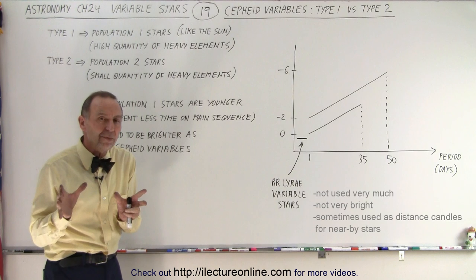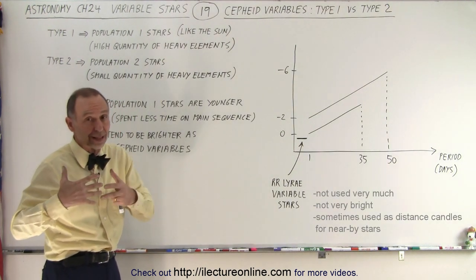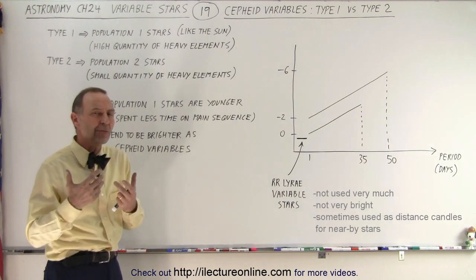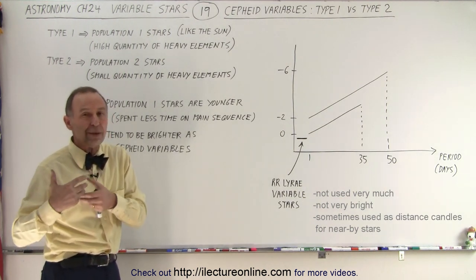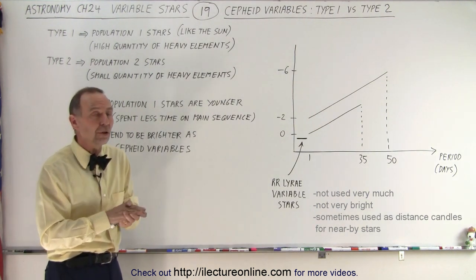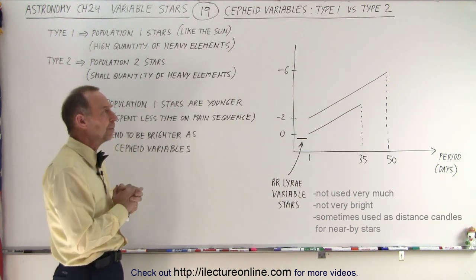So by the time they become Cepheid variables, notice that younger stars on average have spent less time on the main sequence than older stars. And the younger stars tend to be brighter, bigger and brighter than the older stars. So also the internal process seems to be a little bit different as well.